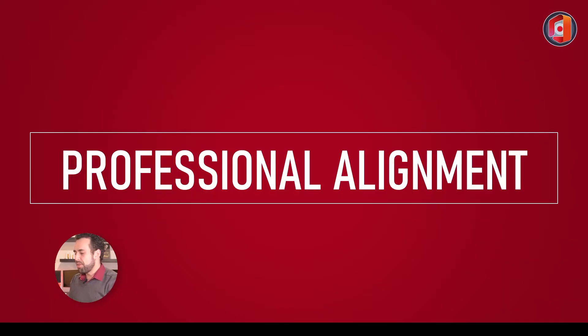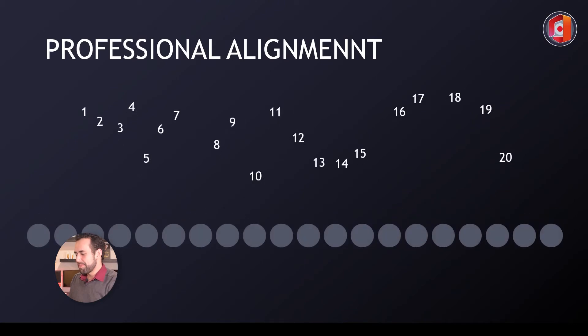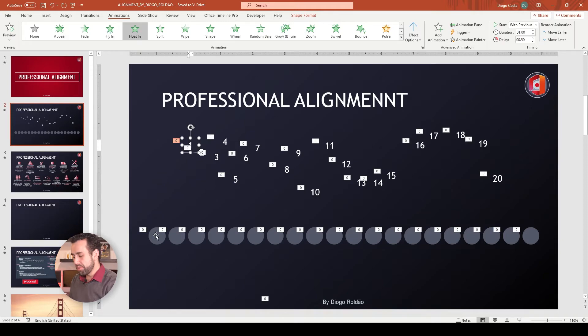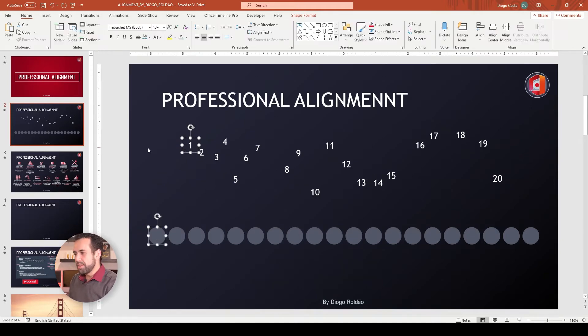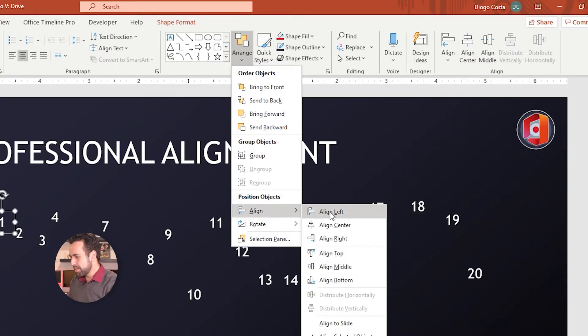Today let's talk about professional alignment. I'll start with one challenge — look at this on screen. How much time would you take to align each one of these numbers into each one of these circles? Would you drag it? There are features in PowerPoint that handle this for you. First, click on the first number and the first circle, hold Ctrl to select both, then go to Home, Arrange, Align, and click Align Left.